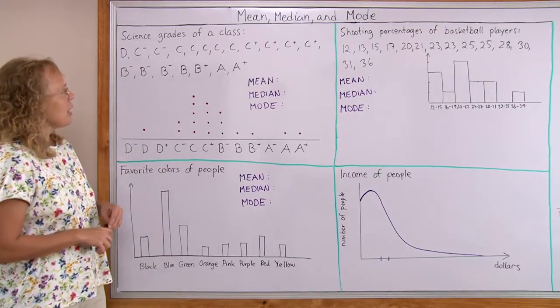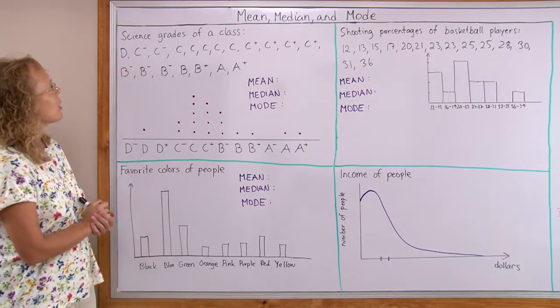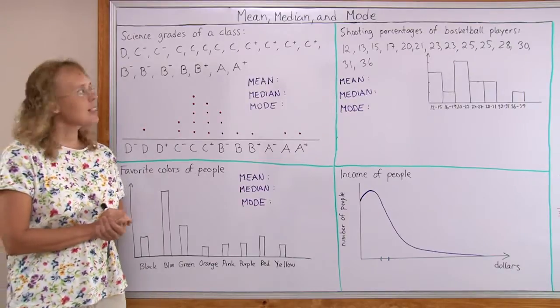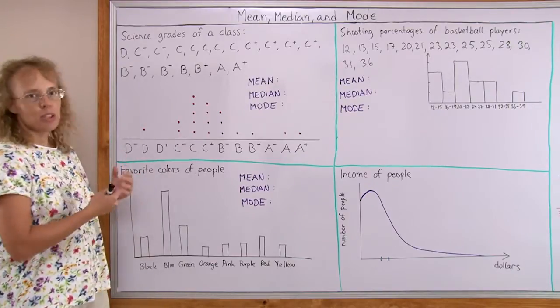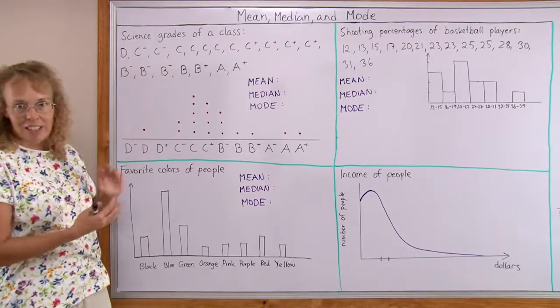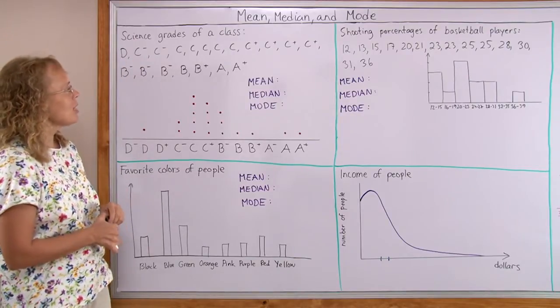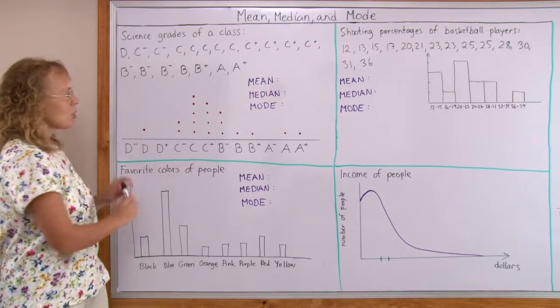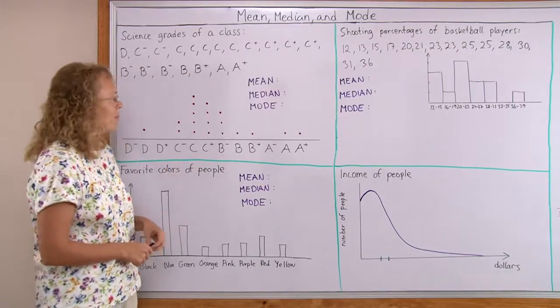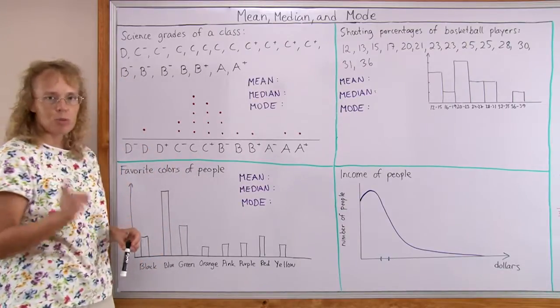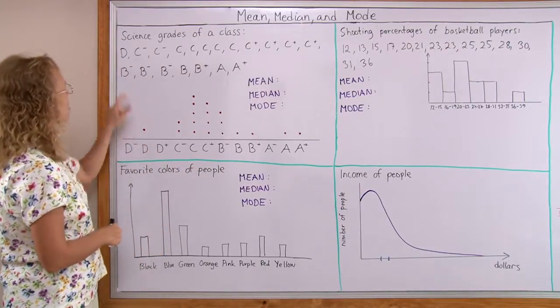My first example is about the science grades of a class. Let's say that we have so many students and here are all of their grades written out. And here is the distribution done as a dot plot. Each dot corresponds to one student. One student got a D.